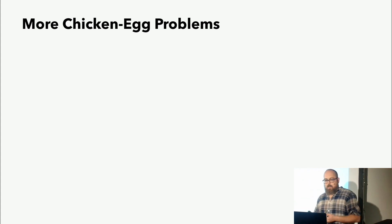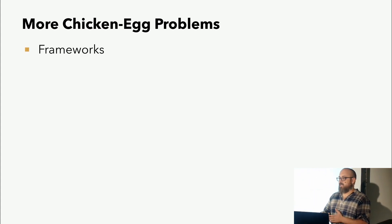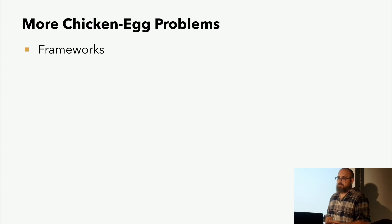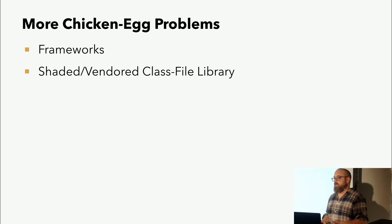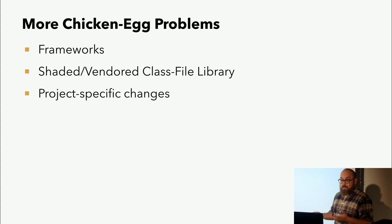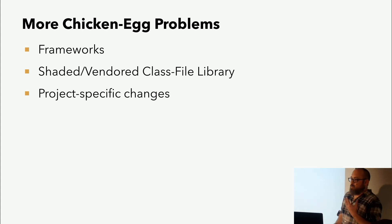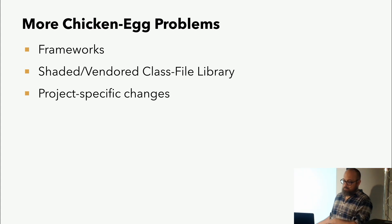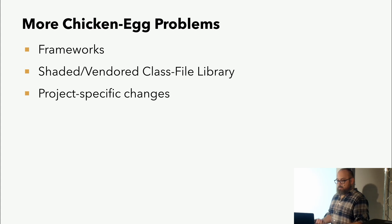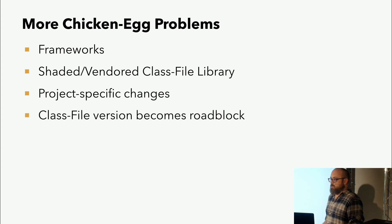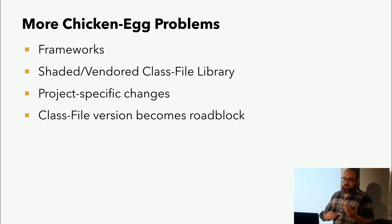Aber es gibt noch mehr Henne-Ei-Probleme, und zwar für Frameworks und Libraries, die hinten dran sind. Die nicht direkt das JDK benutzen, sondern so etwas wie ASM benutzen. Wir haben Spring, Tapestry, Hibernate – sind alle davon betroffen. Viele dieser Libraries inkludieren ASM oder eine andere Classfile-Library direkt im Code, um zu verhindern, dass eine andere Version gezogen wird. Manchmal gibt es auch spezifische Änderungen in den Libraries – bei Tapestry ist genau eine Datei an einer Stelle, eine Zeile geändert von ASM. Was aber gleichzeitig bedeutet, wenn es eine neue ASM-Version gibt, müssen wir da auch drauf achten. Das macht jedes Update noch komplizierter. Letztendlich heißt das, dass jede Classfile-Version ein potenzieller Roadblock wird. Frameworks müssen auf die Classfile-Library warten, die Classfile-Library muss auf das JDK warten und das JDK muss auf die Classfile-Library warten.